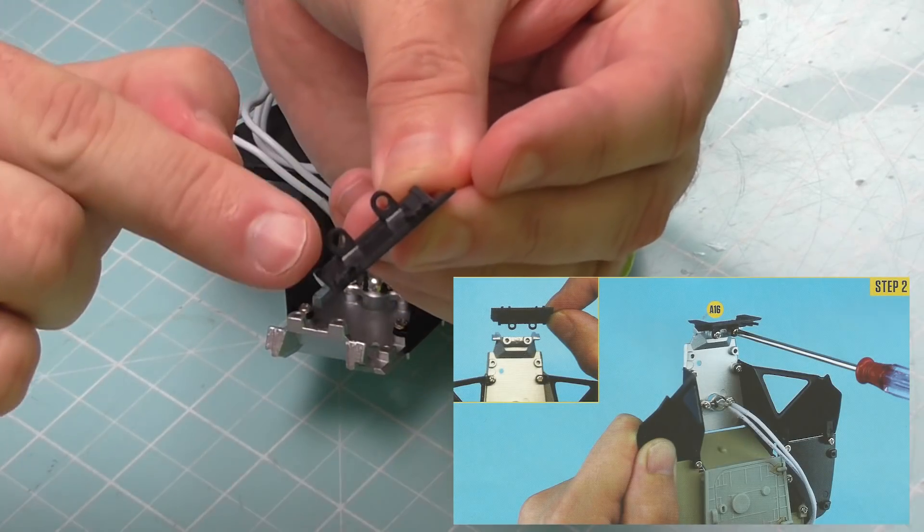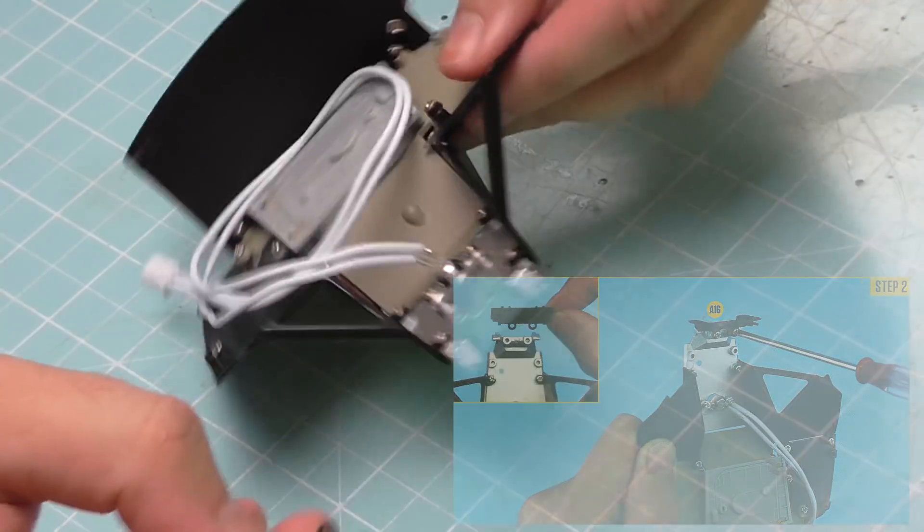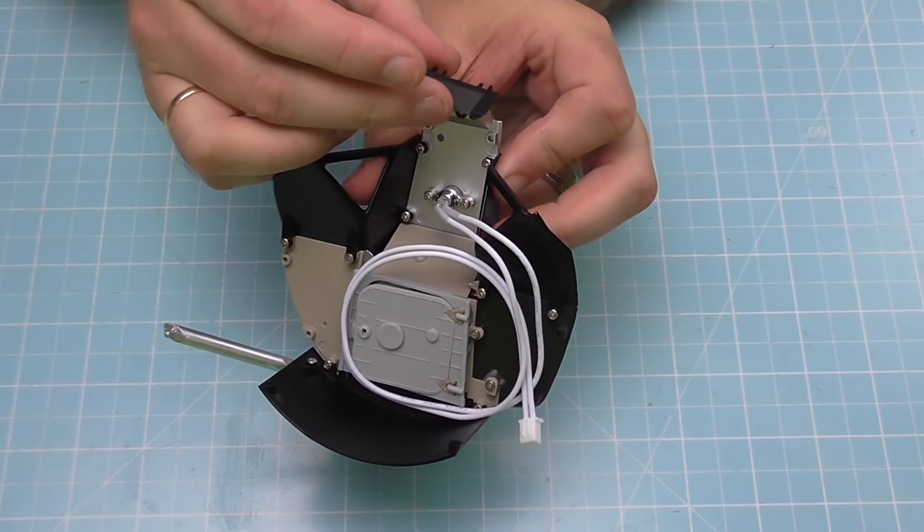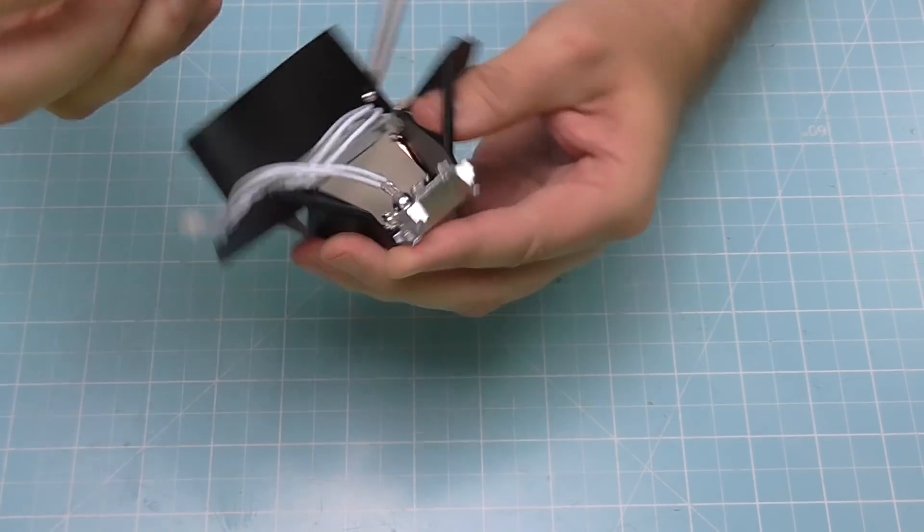It's got screw holes that look like again on the top, but we're going to be concentrating on these ones down the bottom. Now this is going to fit above this silver section here. It's going to sit on top. It has got a certain way around that it goes.